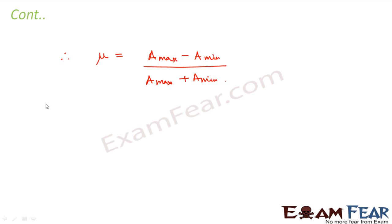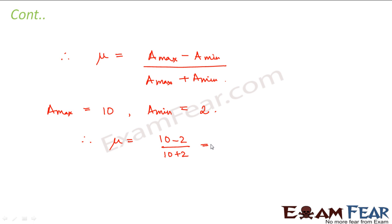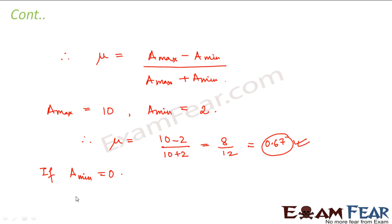Applying this to the problem: the maximum amplitude is 10 volts and the minimum amplitude is 2 volts. Therefore μ = (10 − 2) / (10 + 2) = 8/12 = 0.67. If instead the minimum amplitude is 0 volts, then μ = (10 − 0) / (10 + 0) = 1. So those are the two modulation index values.